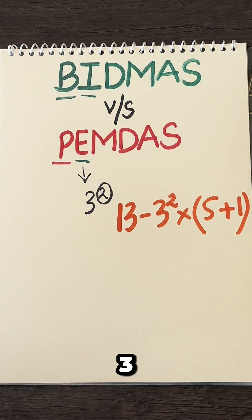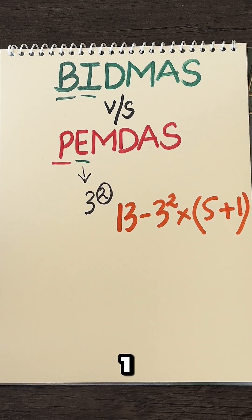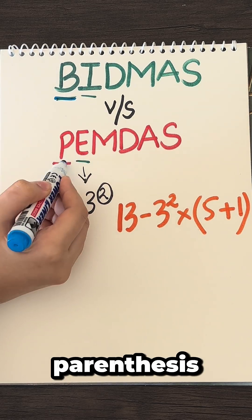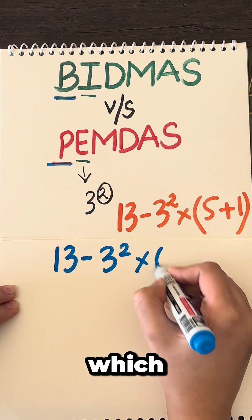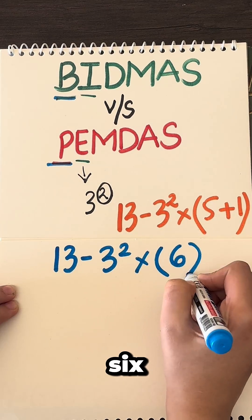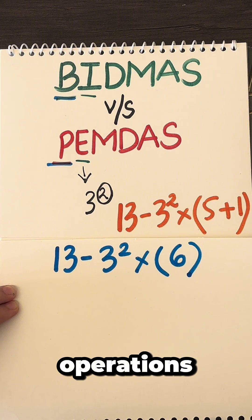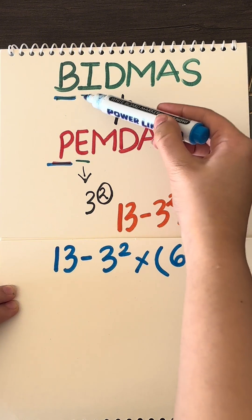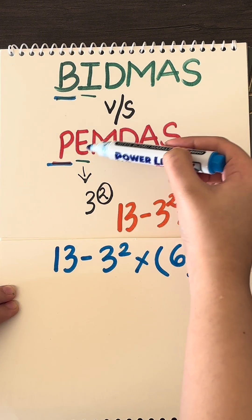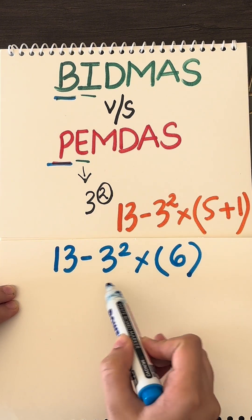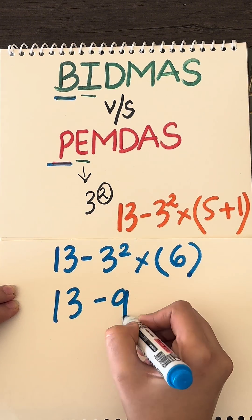13 minus 3 squared into 5 plus 1. We are going to go with the brackets or parenthesis first, which comes as 6. We'll go in the order of operations no matter what, and here comes exponents after brackets. So let's solve this — this gives us 9.